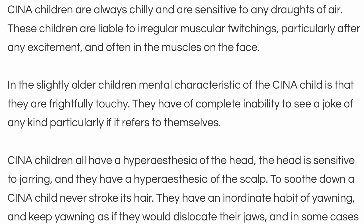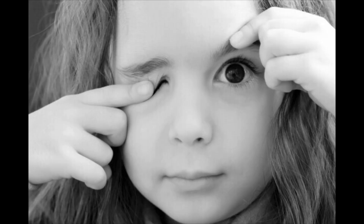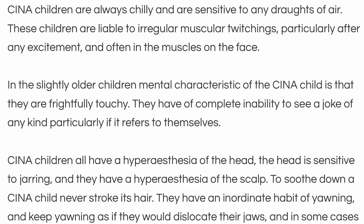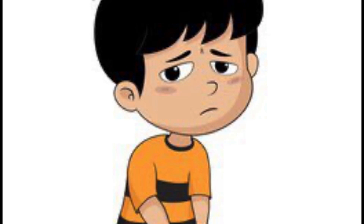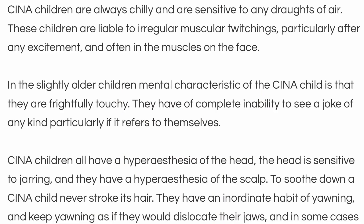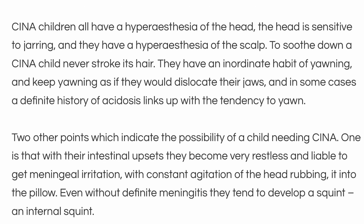These children are liable to irregular muscular twitchings, particularly after any excitement, and often in the muscles of the face. In slightly older children, a mental characteristic of the Sina child is that they are frightfully touchy — they have a complete inability to see a joke of any kind, particularly when it refers to themselves. Sina children all have a hyperesthesia of the head; the head is sensitive to jarring, and they have a hyperesthesia of the scalp as well.